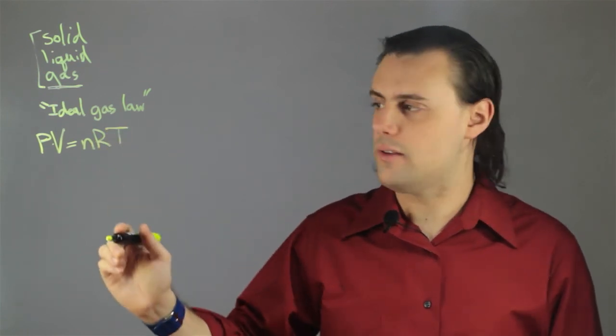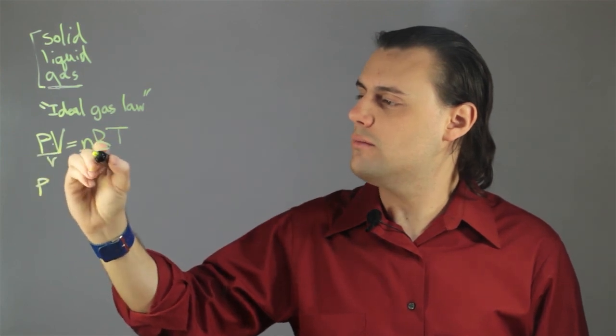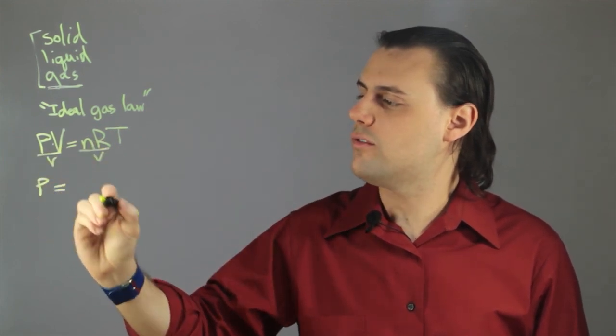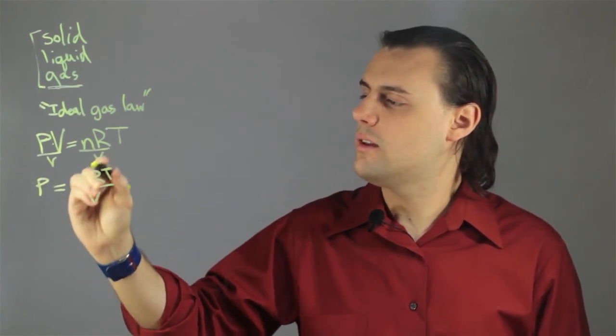So, if I want to solve for the pressure, I simply divide both sides by the volume, and I have the pressure equals nRT divided by V.